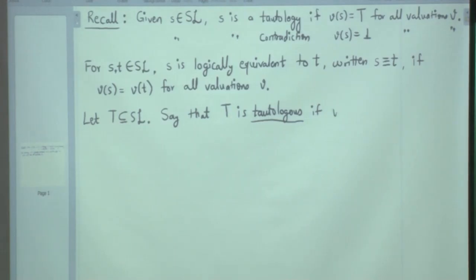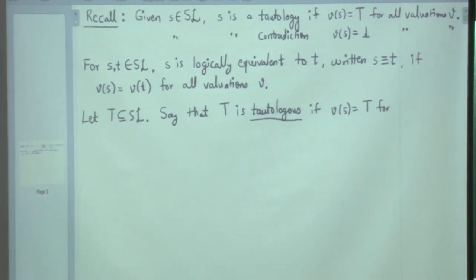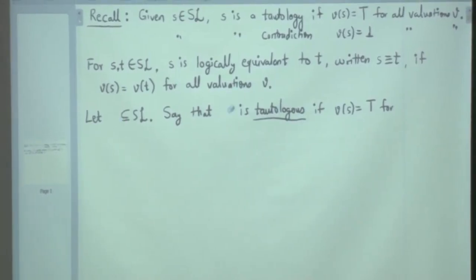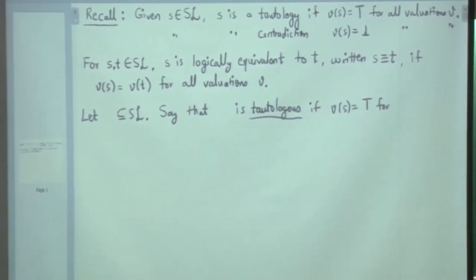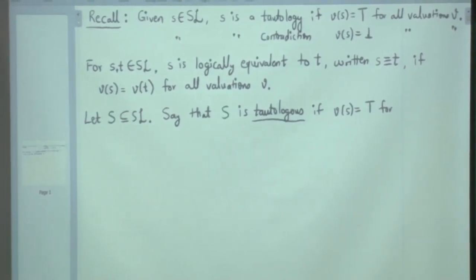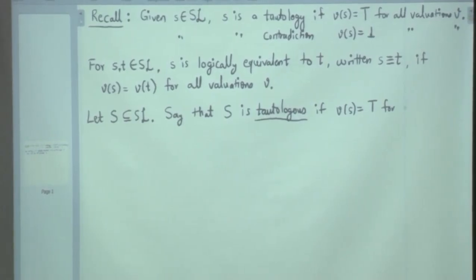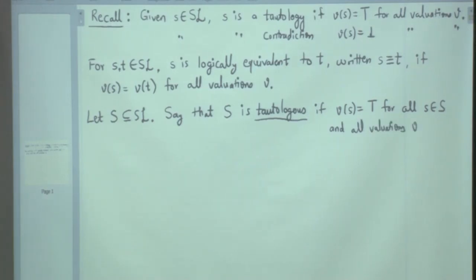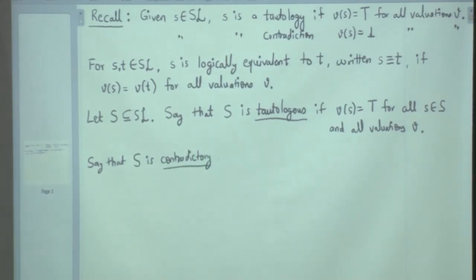We say that S is tautologis if V of S is true for all S in S and all valuations. We say that S is contradictory if for any valuation V, there is some S in S such that V of S is false.